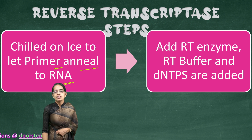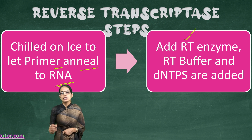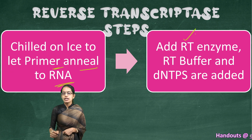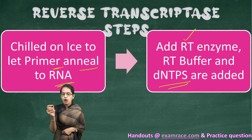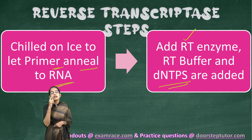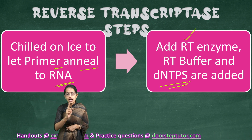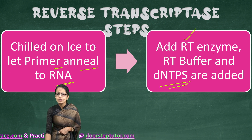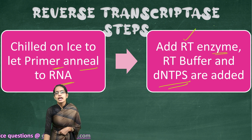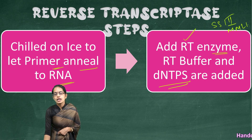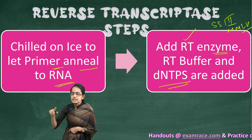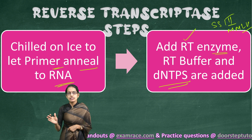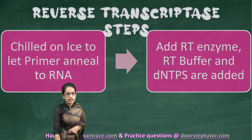At this point, the RT or reverse transcriptase enzyme is added, along with buffer and dNTPs. All three are required for converting RNA to DNA. The enzyme choice is either Superscript 3 or MMLV — these are the two common enzymes used.